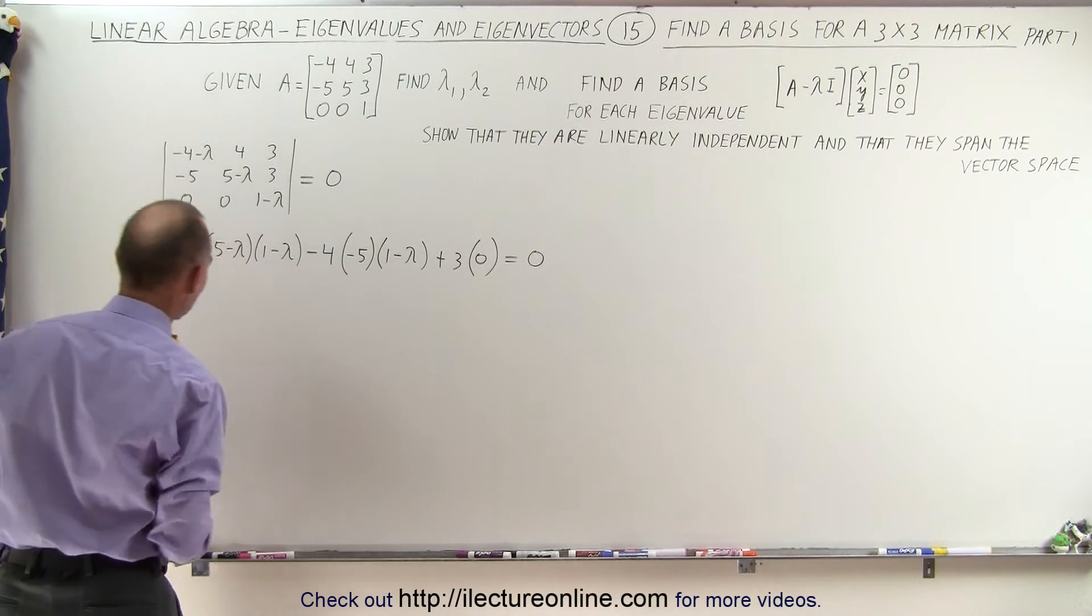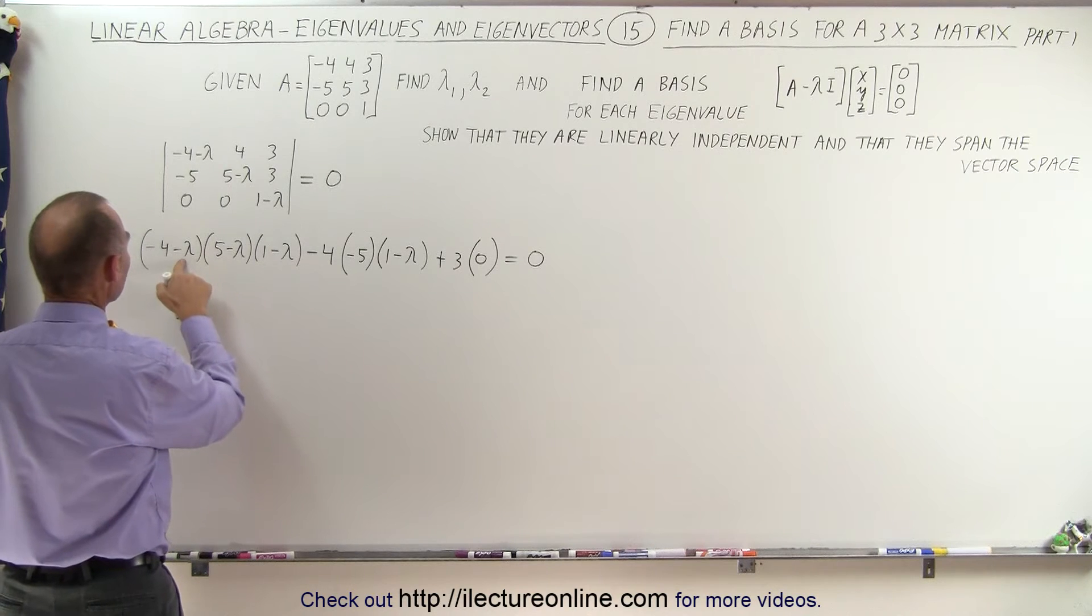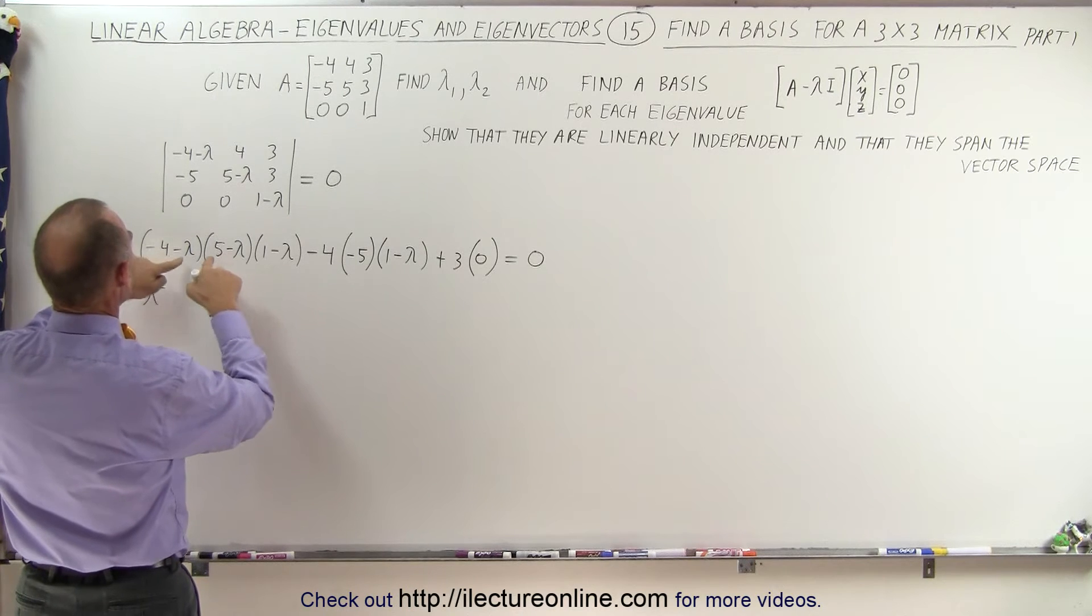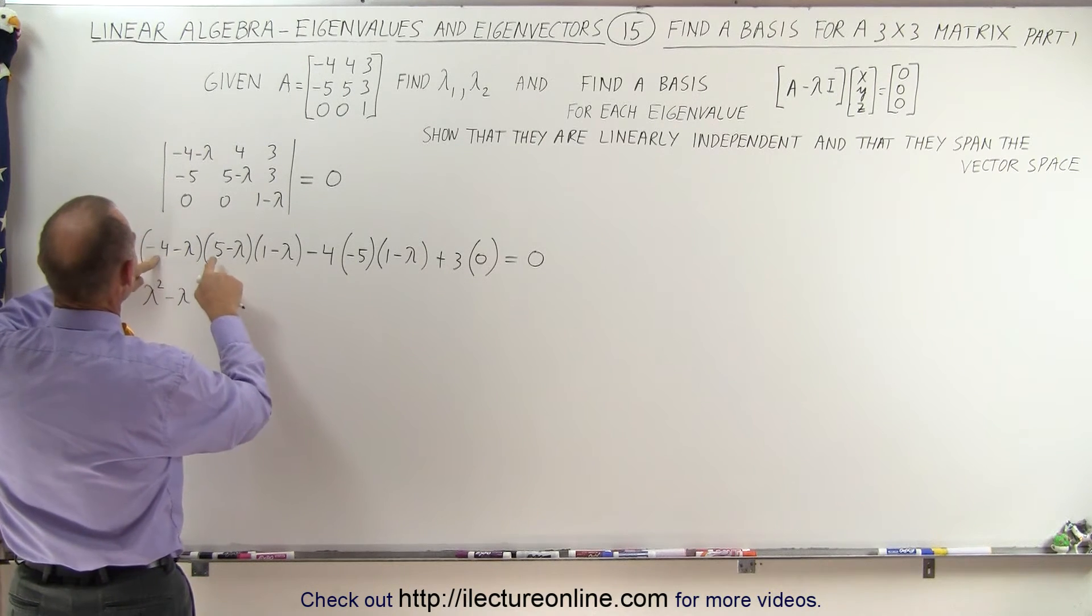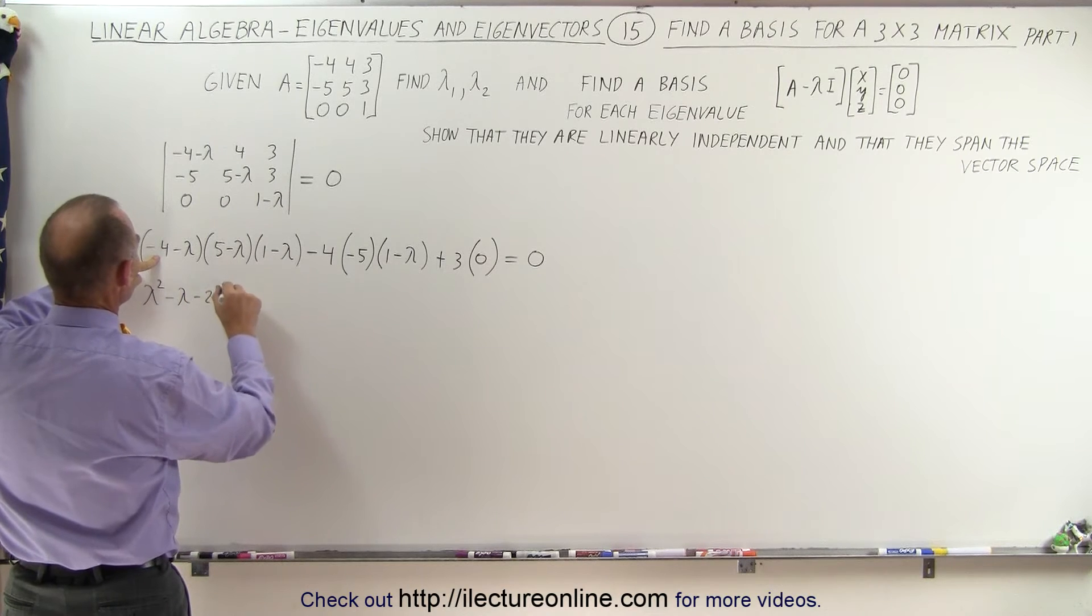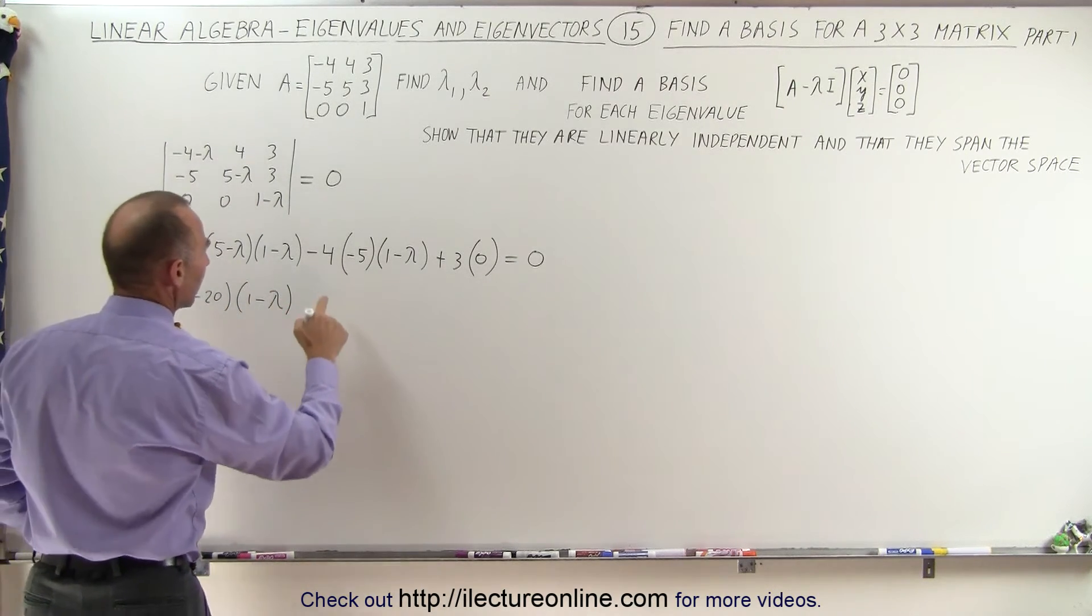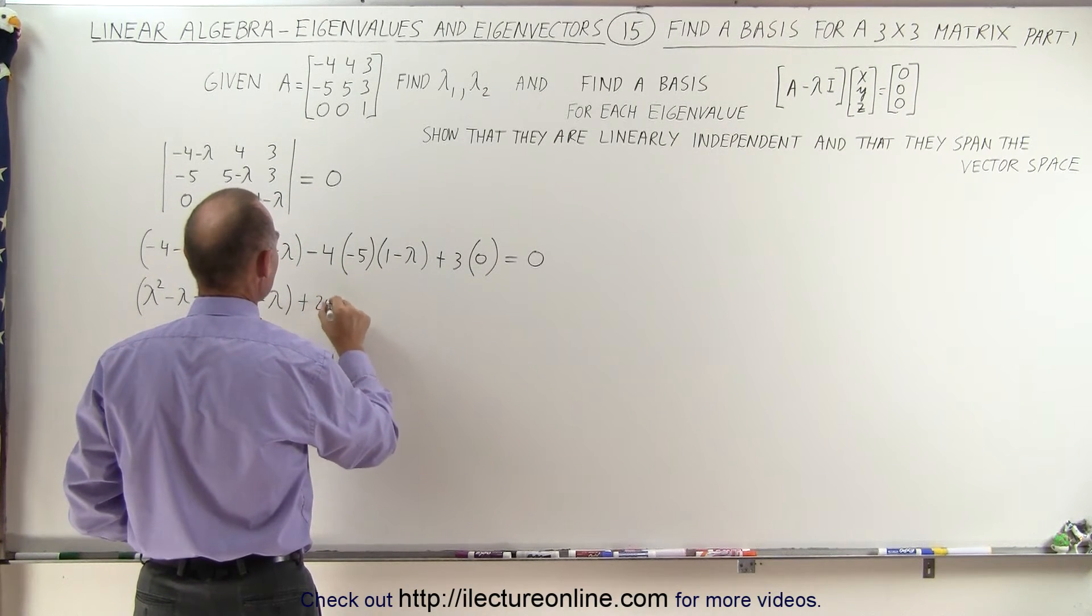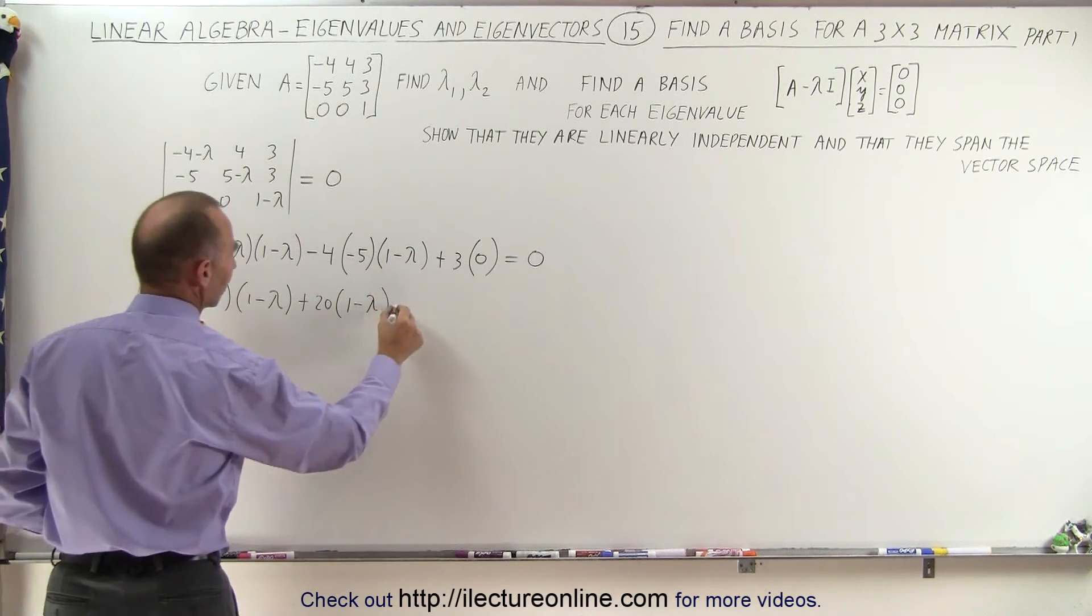Now we have to work this out and see what we get. So first we'll multiply these two together. So minus lambda times minus lambda is lambda squared. We get plus 4 lambda minus 5 lambda which is minus lambda and then this times this is minus 20. Multiply this times 1 minus lambda. Here we can simplify that by minus 4 times minus 5 is plus 20 times 1 minus lambda. And that is equal to 0.